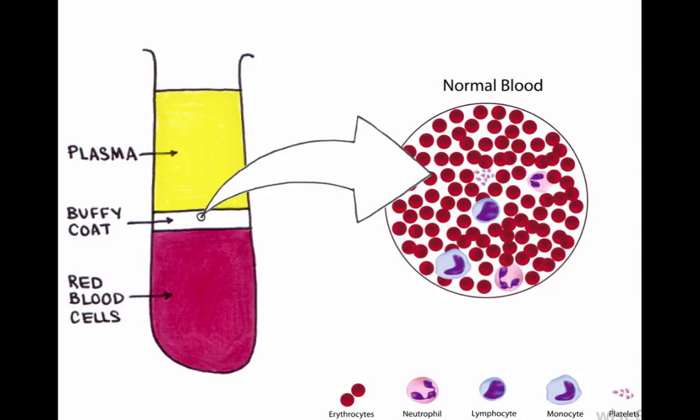Here is a normal slide showing the cellular composition of blood. The red circles represent the red blood cells, the little clusters in the centre depict the platelets, and the larger blue and purple cells represent different leukocytes. Notice the ratio of red blood cells to leukocytes.